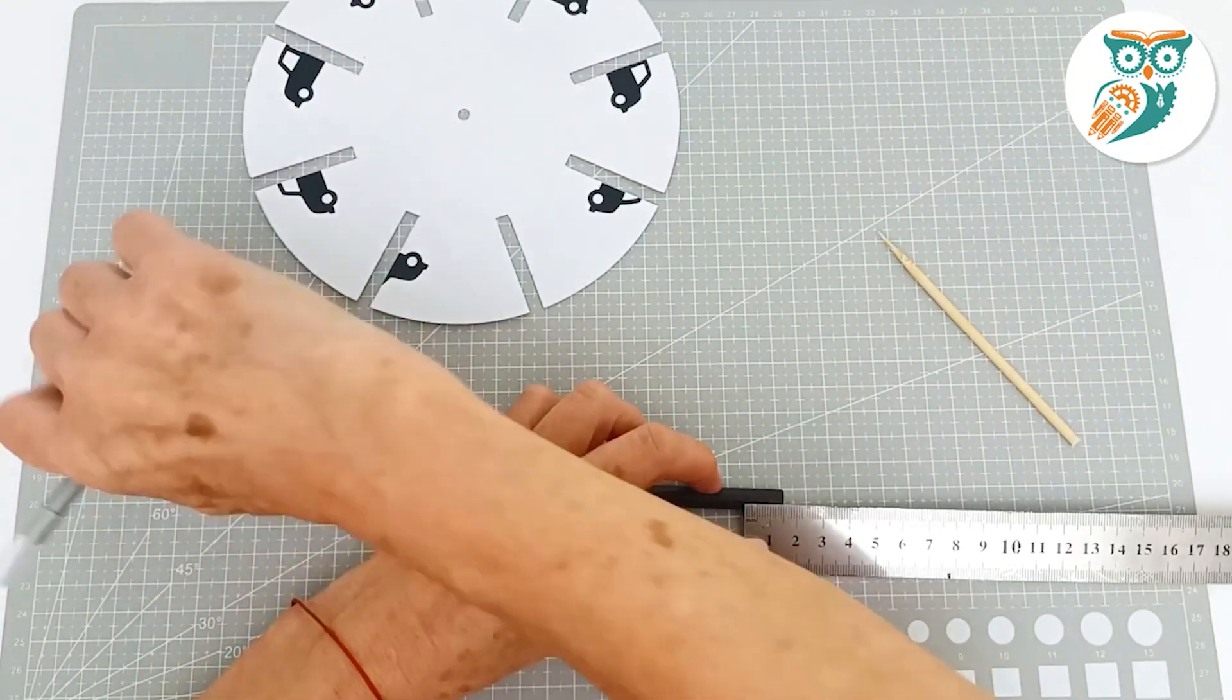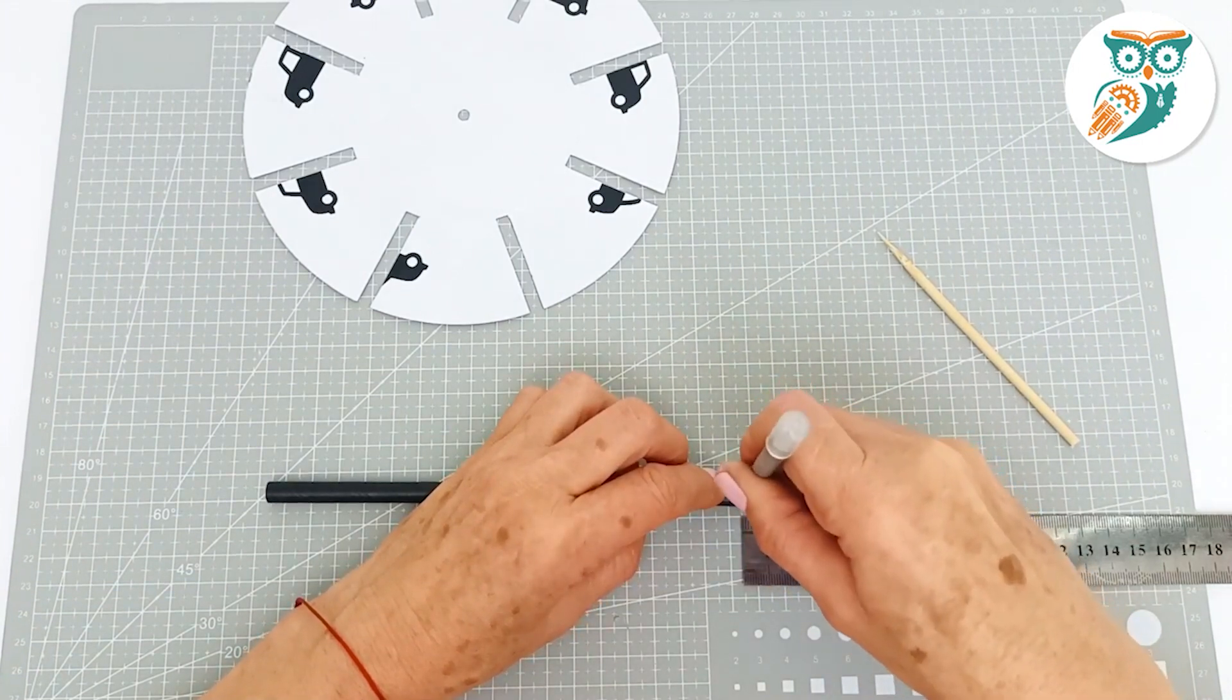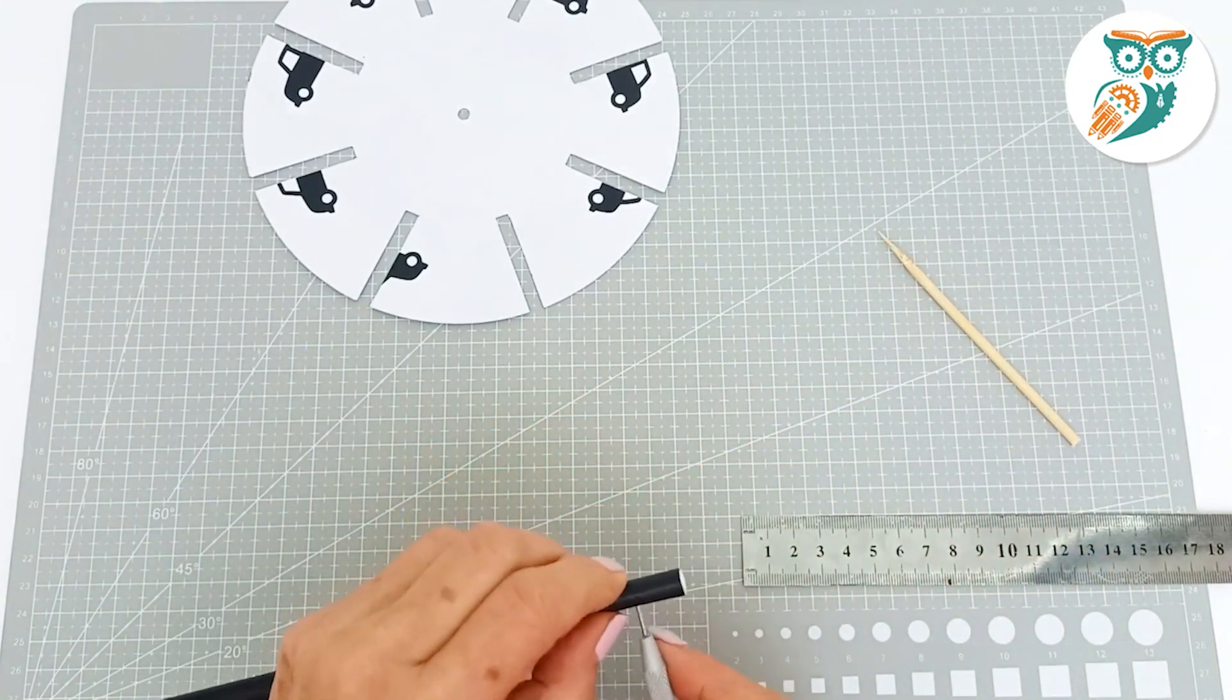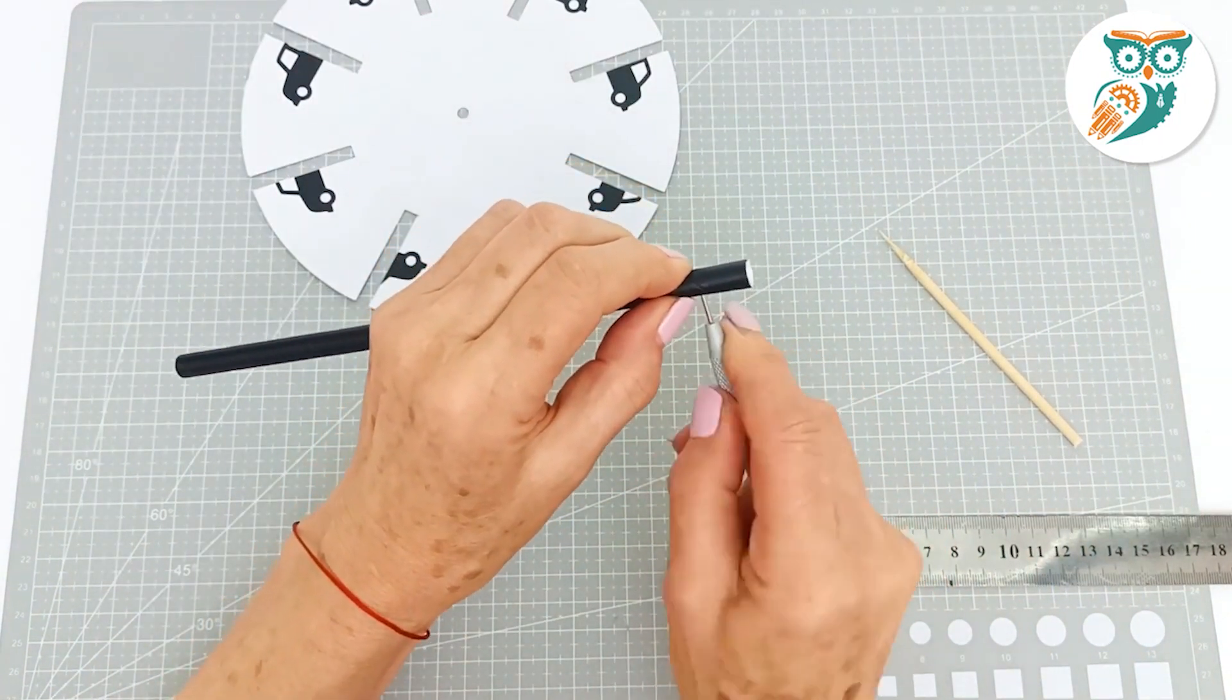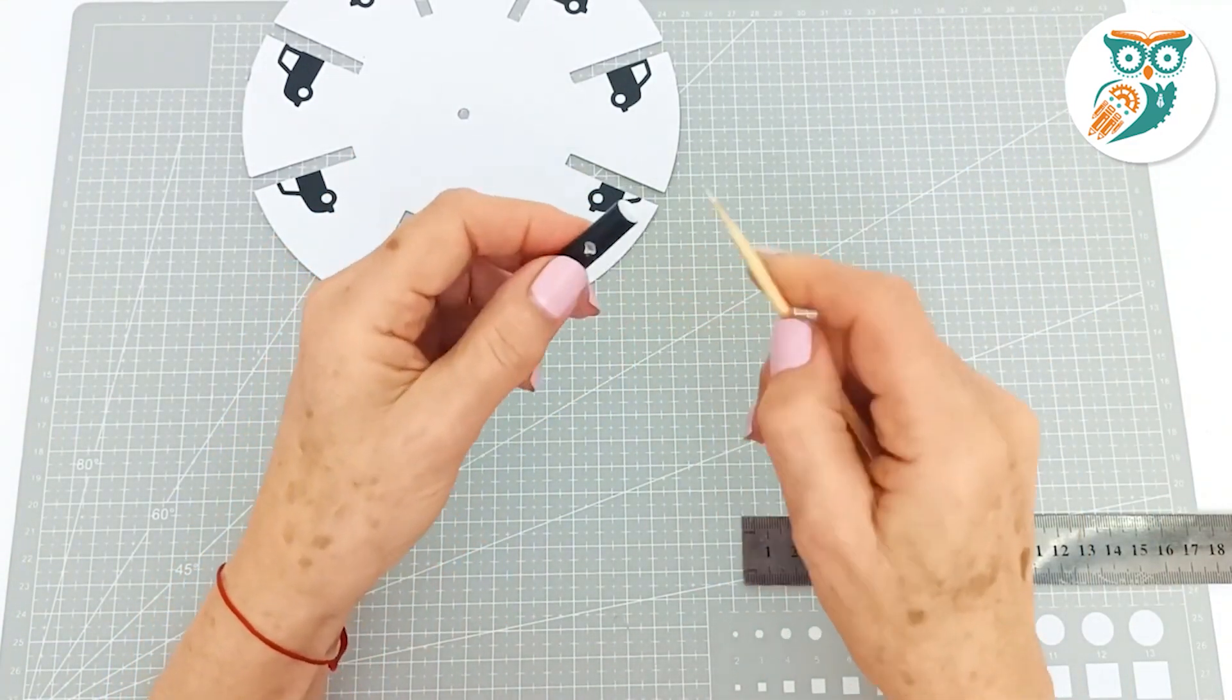Now we're just going to take a straw. We're using a paper straw and we're going to measure 1.5 centimeters and we're going to make a hole right there. We're using an awl to make our hole and then you can just grab a skewer and widen that hole out a little bit.